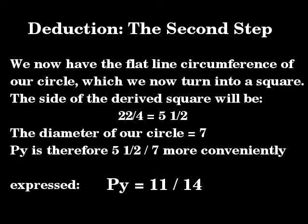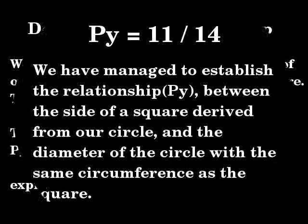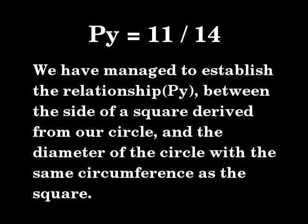Pi equals 11 over 14. Deduction, the second step: we now have the flat line circumference of our circle, which we now turn into a square. The side of the derived square will be 22 divided by 4, which is 5 and a half units — 22 being the circumference and there being 4 sides to a square. The diameter of our circle is 7 units. The ratio Pi is therefore 5 and a half over 7, or more conveniently expressed, Pi is 11 over 14. We have managed to establish the relationship Pi between the side of a square derived from our circle and the diameter of a circle with the same circumference as the square.